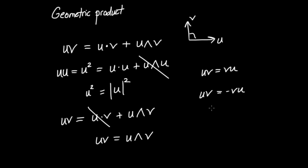An important conceptual point: the inputs to the geometric product are two vectors — one-dimensional objects. But the output is a sum of a scalar (a grade-zero, zero-dimensional object from the dot product) and a bivector (a grade-two, two-dimensional object from the wedge product). So this is quite different from anything you might have seen before in vector analysis.